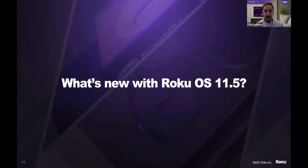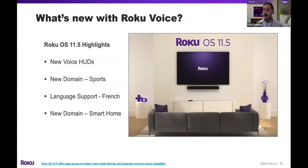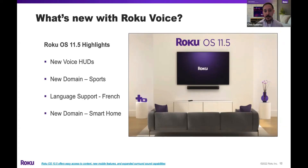With that brief overview, I want to talk about what we built in Roku OS 11.5, which is rolling out right now. Four things to highlight: first, we completely redid our voice information and overlay system — what we call our voice HUDs. Second, we have a number of new domains that we taught our natural language understanding systems to parse, notably sports — you probably saw the announcement; we have a sports hub now. Third, Roku voice learned French and we launched that in Canada. And fourth, we added support for a new smart home domain, announced about a week or two ago.